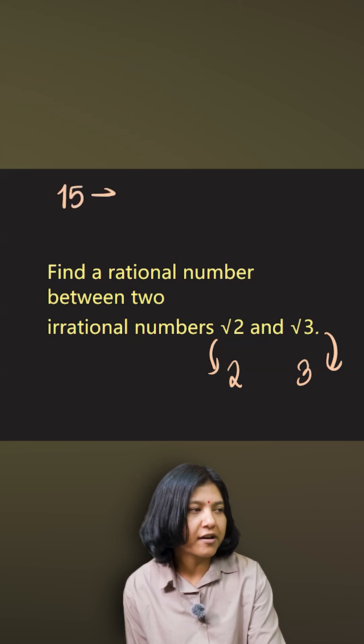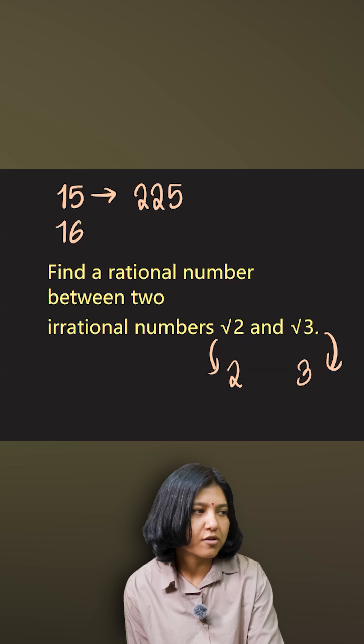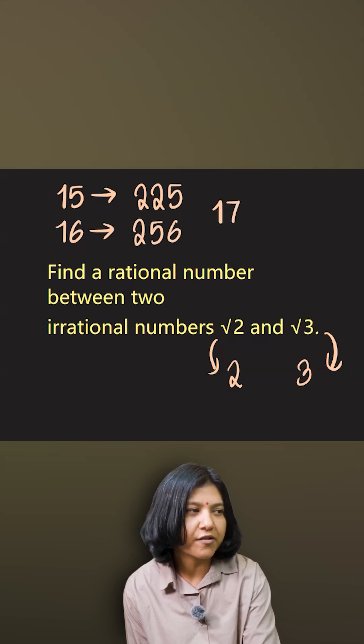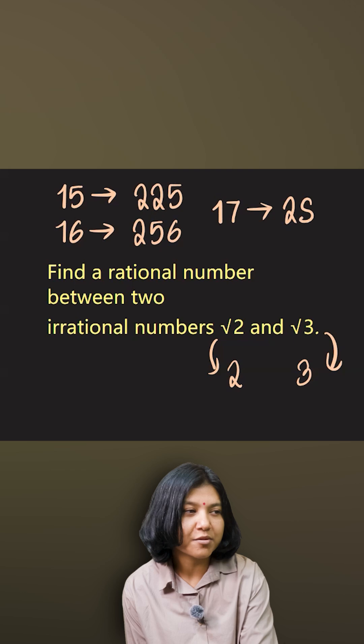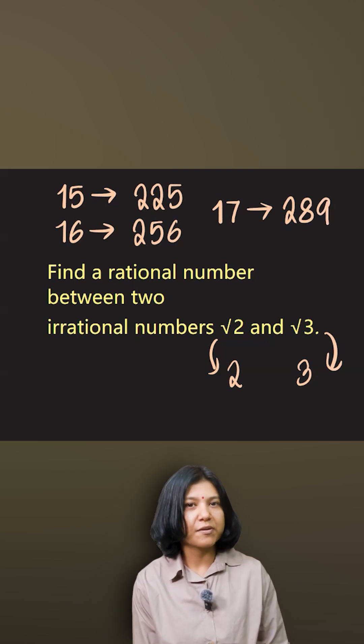I know the square of 15 is 225. Similarly, I can think about the square of 16 which is 256, likewise for 17 it's 289. So we can find up to three rational numbers. Interestingly, these three rational numbers could be lying between √2 and √3.